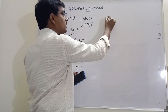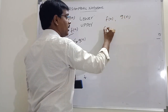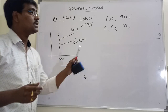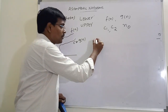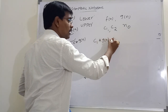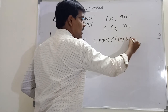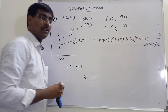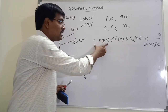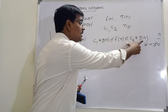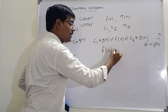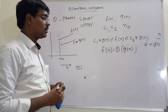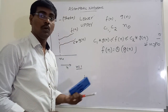Consider two functions f(n) and g(n), and two constants c1 and c2, and an integer n0 representing some value of n. Suppose if the condition c1 × g(n) ≤ f(n) ≤ c2 × g(n) is satisfied for all n greater than or equal to n0, then f(n) is represented as Theta of g(n). This Theta notation contains both lower bound and upper bound.